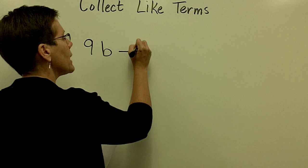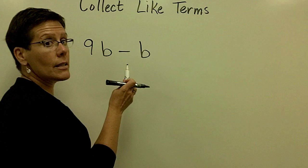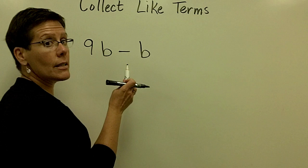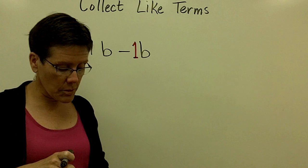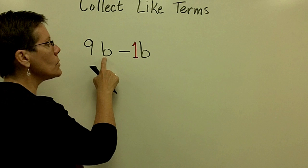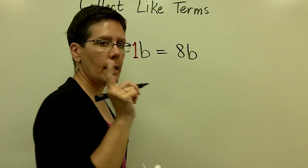If I ask you to take 9b minus b, what you need to recognize is the coefficient in front of this second term is an understood 1. So if it's not written there, you're welcome to write it there. And then go ahead and combine those like terms. There's 9 of those and you're going to take away 1 of those. That's going to give you 8b, again, carry along that variable portion which makes this a like term.